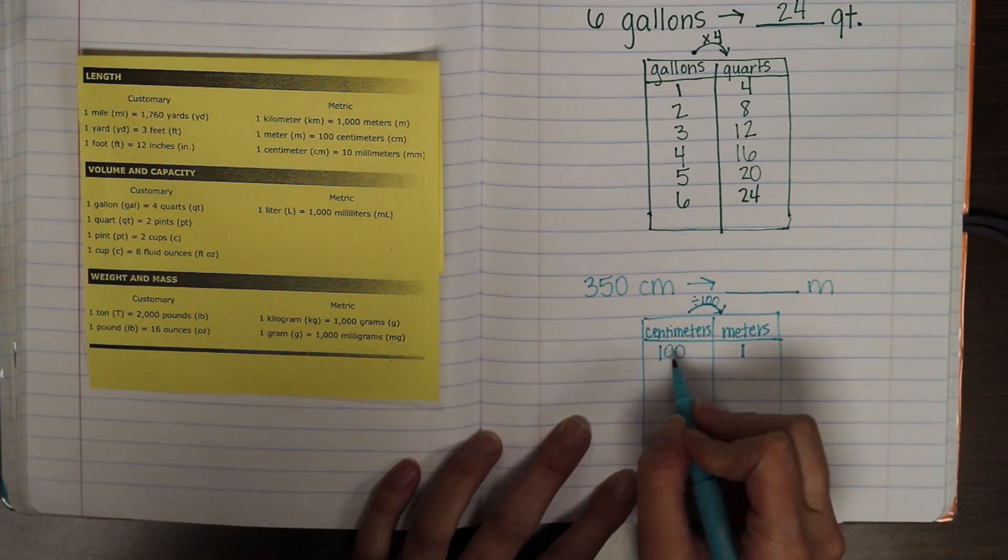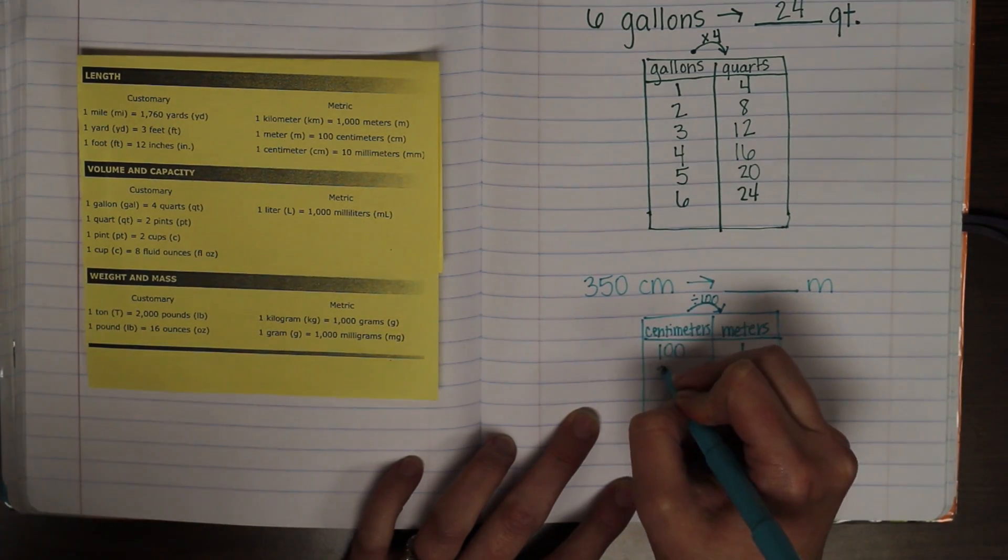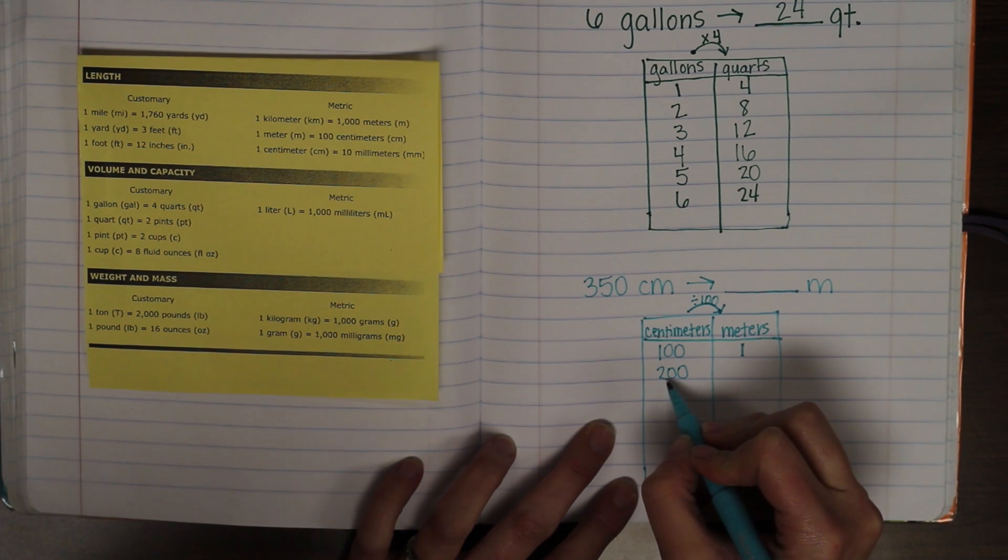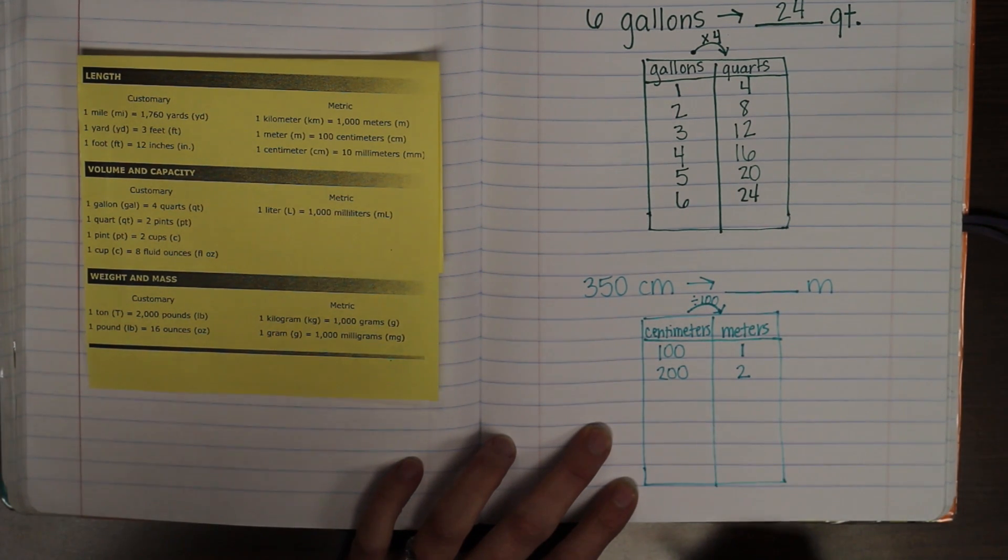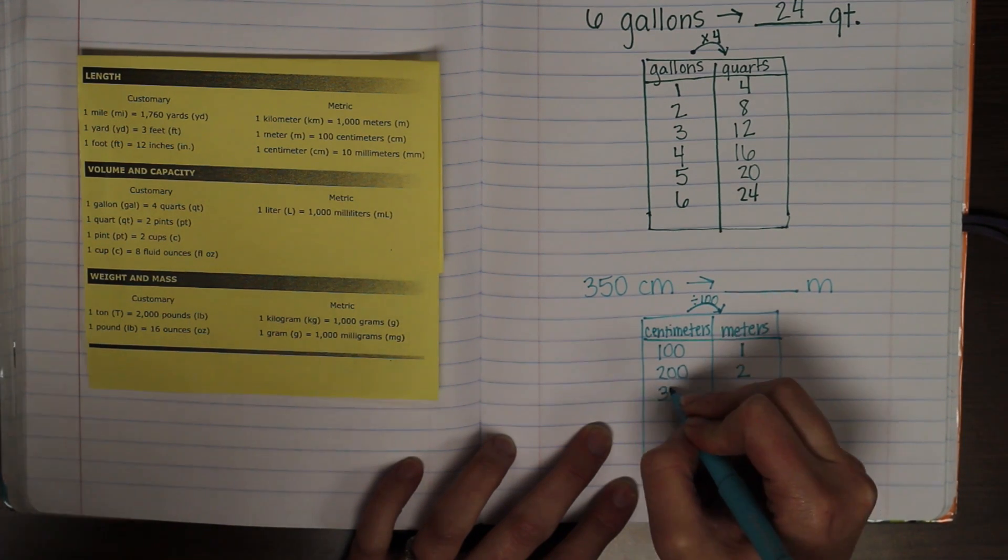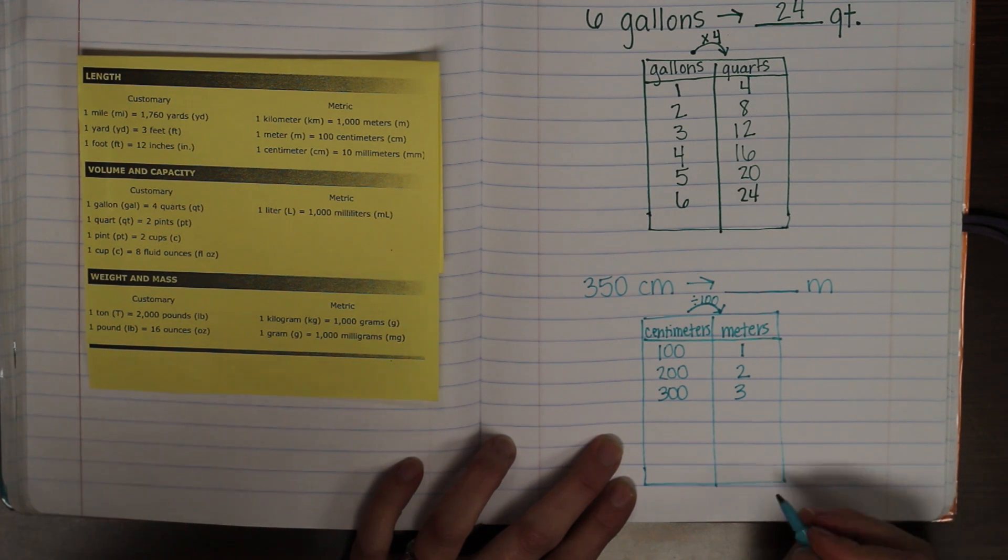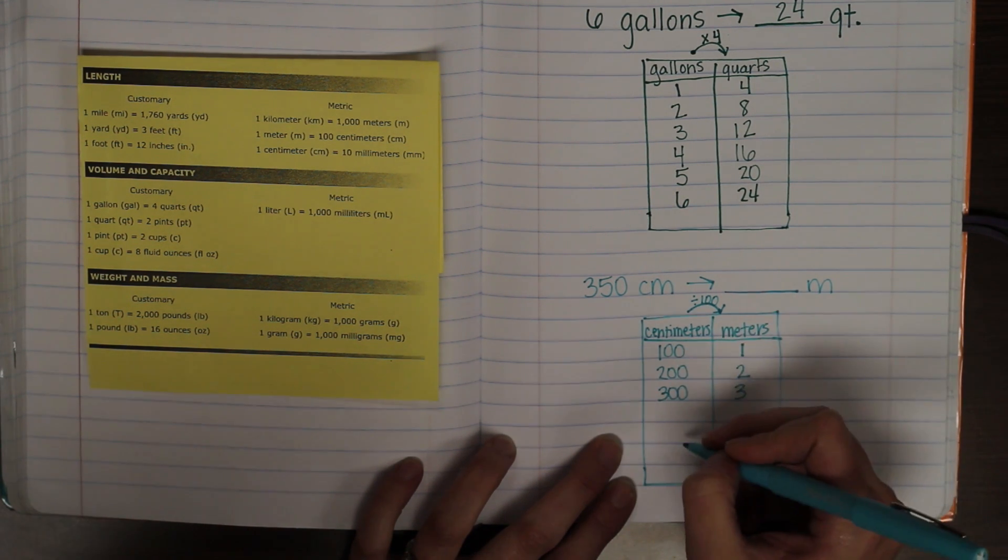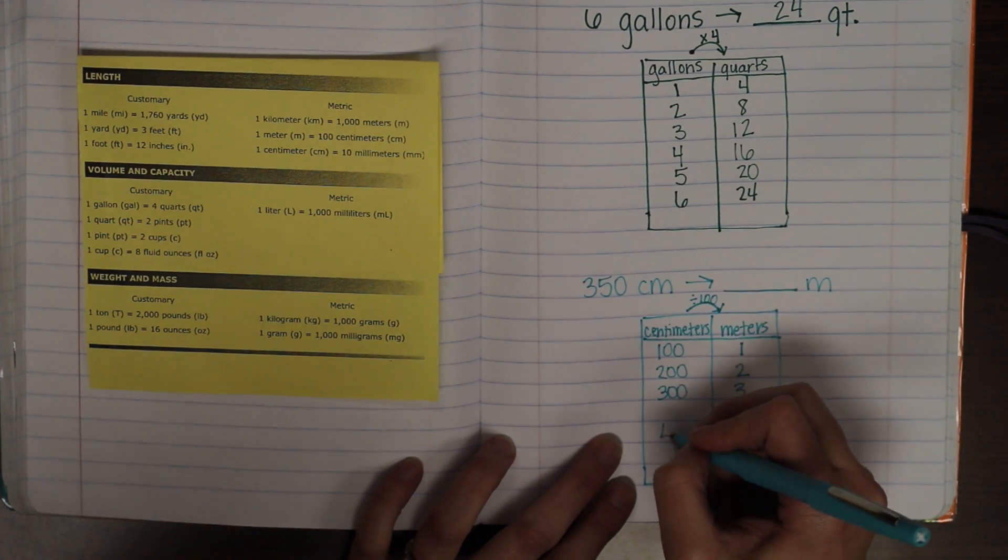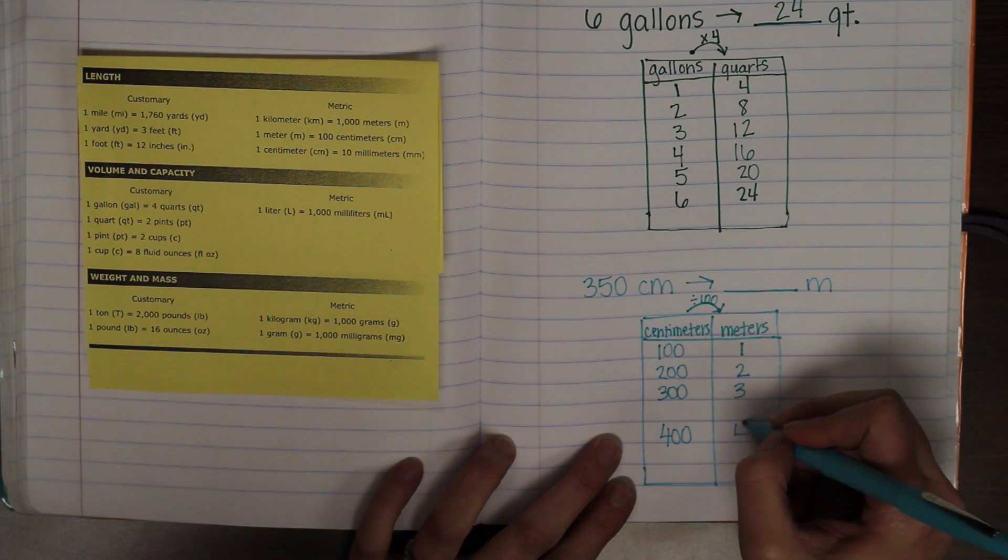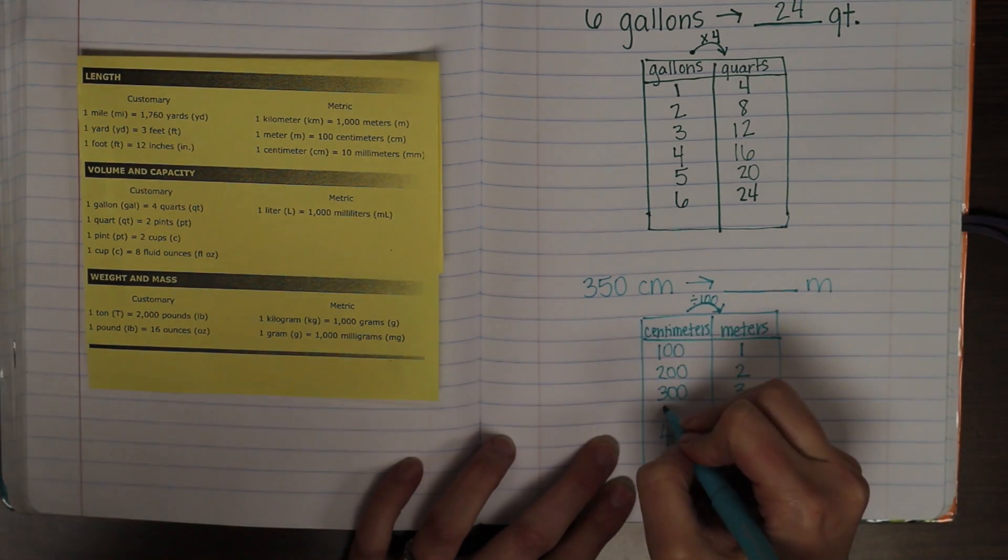So, I need to get all the way to three hundred and fifty centimeters. So, I'm going to now say two hundred centimeters would be equivalent to two meters. Okay. Three hundred centimeters divided by a hundred is three meters. And then the next one would be four hundred if I was going in the same pattern. But I only need three fifty. If it were four hundred centimeters, four hundred divided by a hundred is four meters. But I need it to be exactly in between three hundred and four hundred, which is three fifty.